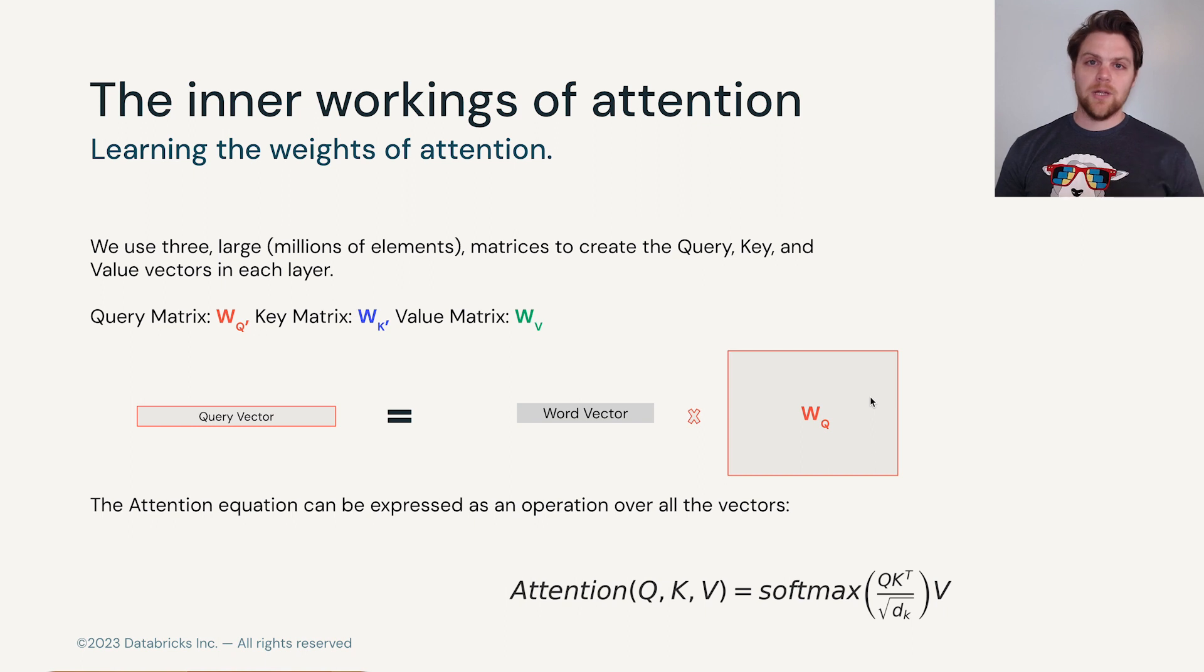Attention is built of three vector families: the query vector, the key vector, and the value vector. We actually have one query vector and that's going to relate to the current token that we're looking at in the sequence. We're going to have a number of key vectors. They're going to come from all of the vectors in the sequence and we're also going to have a series of value vectors.